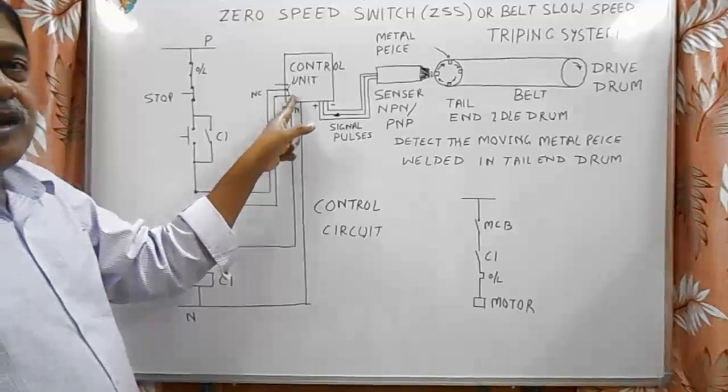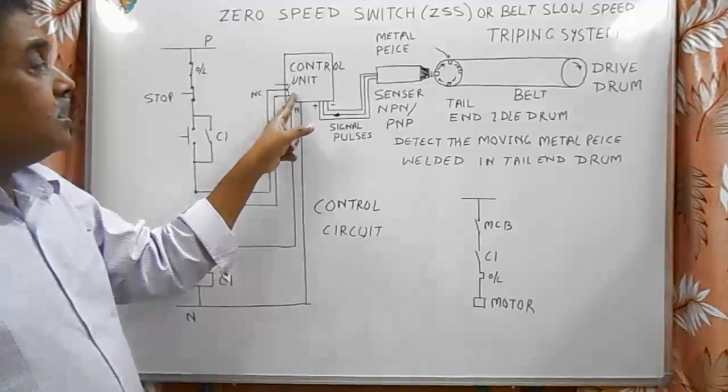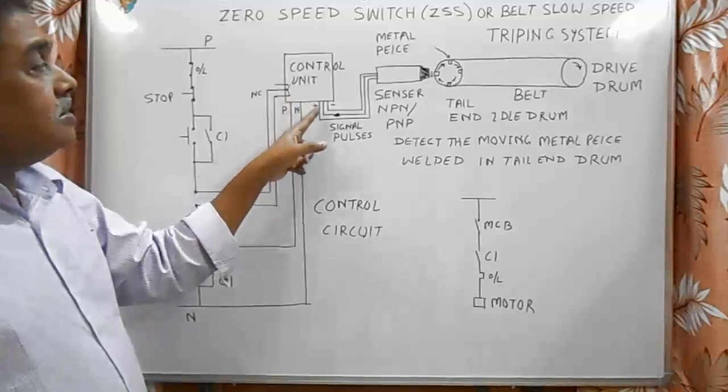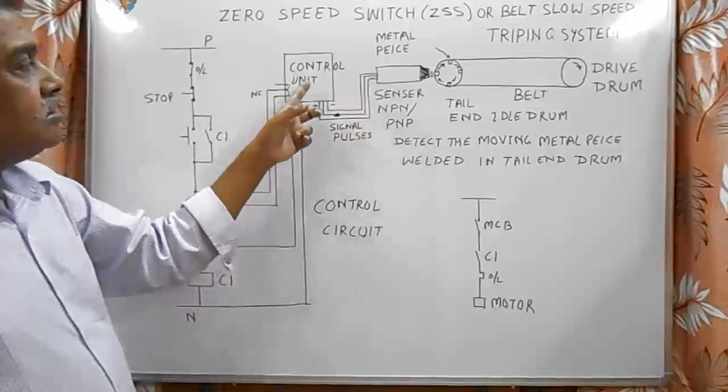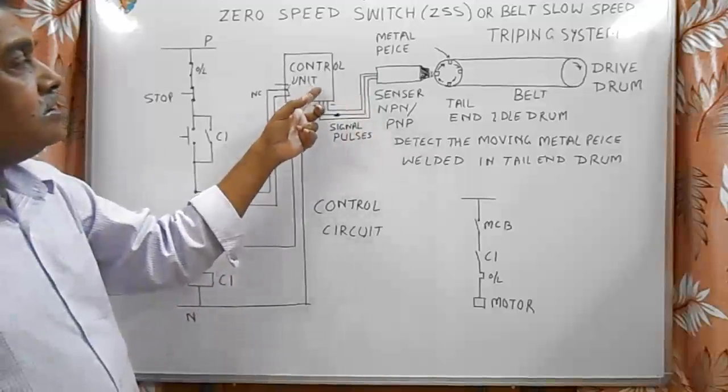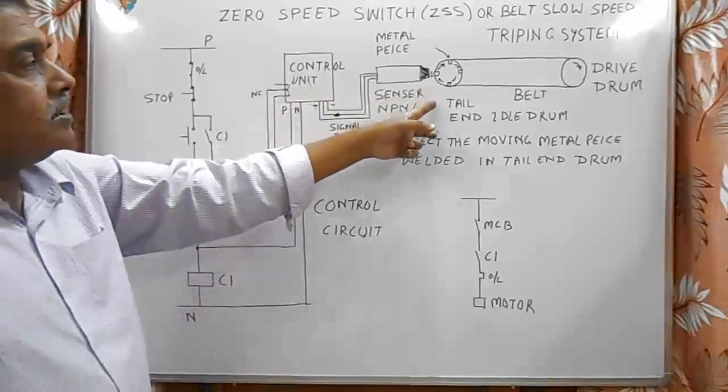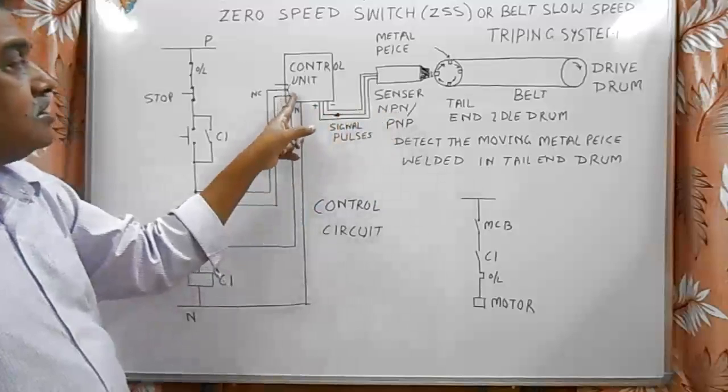After 15 seconds, these pulses return back to the unit and this control unit confirms that the belt is running at the right speed, so it keeps its contact closed.